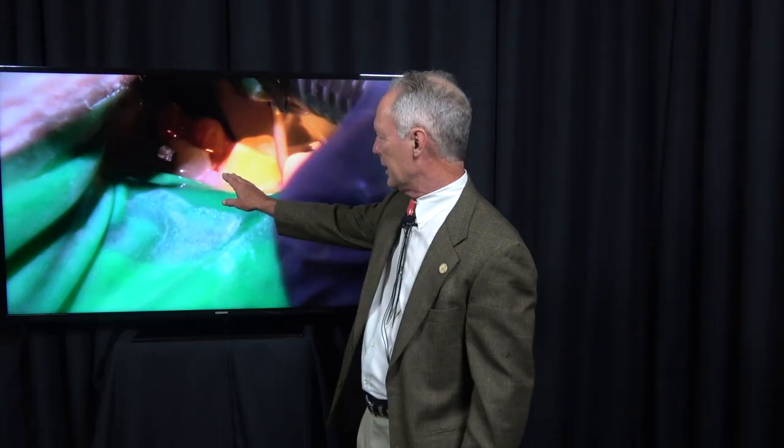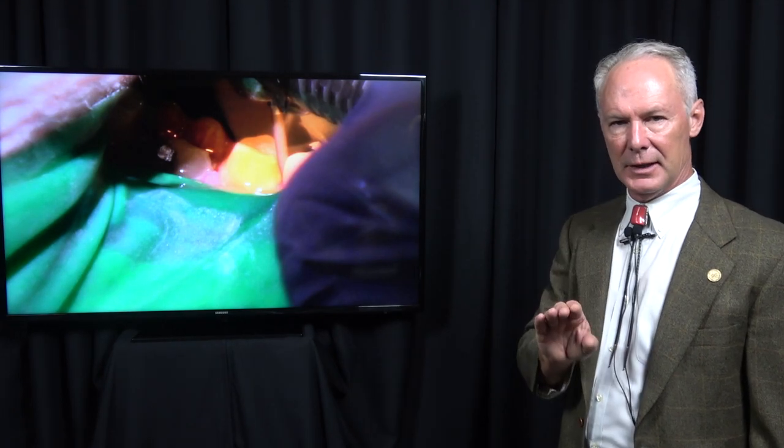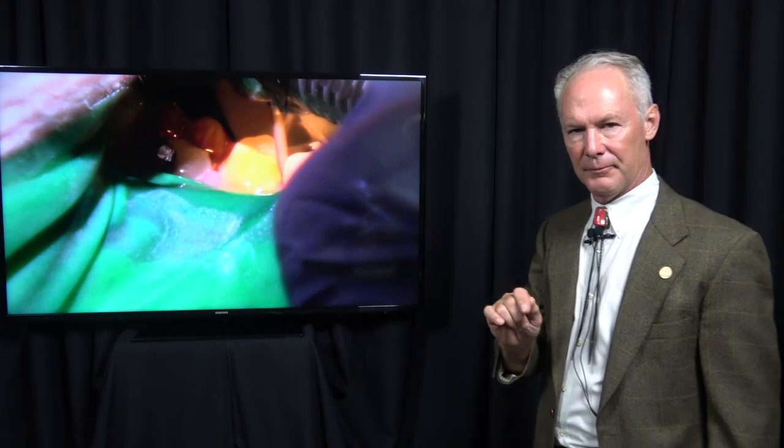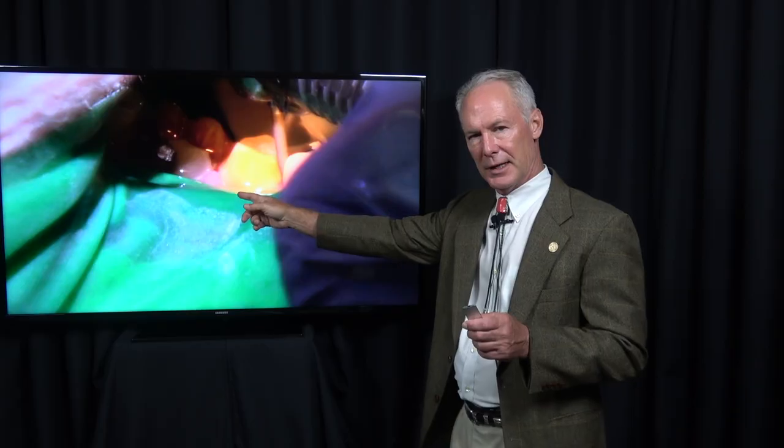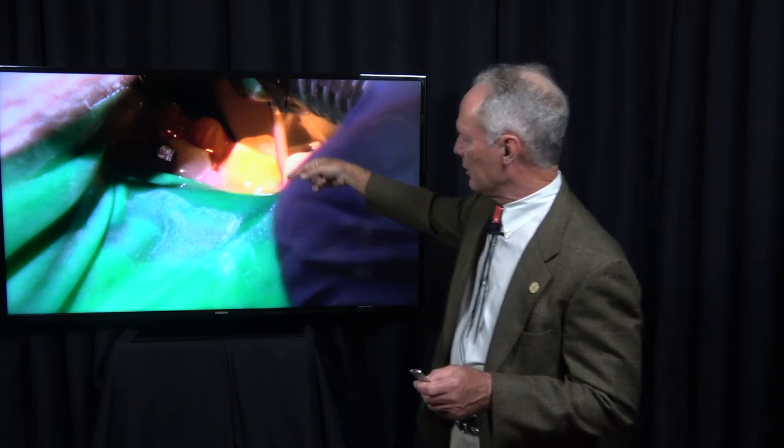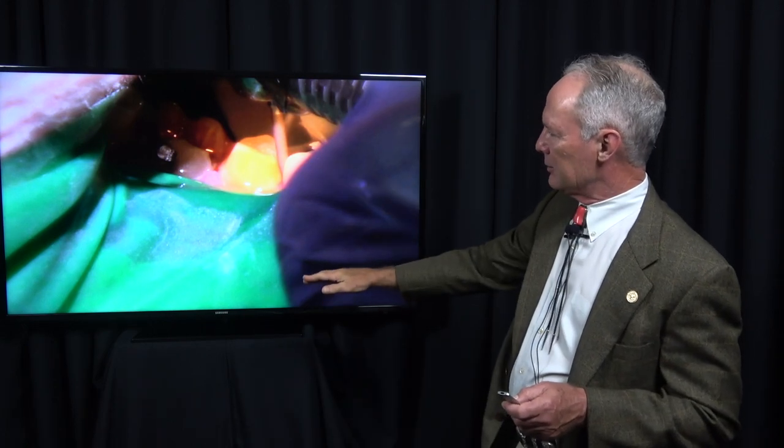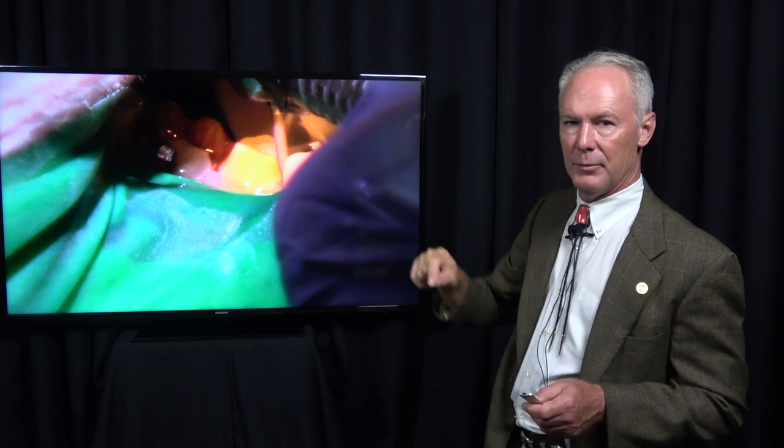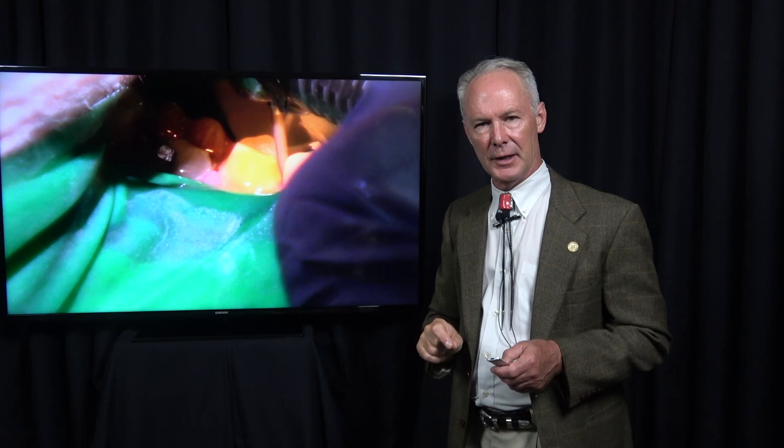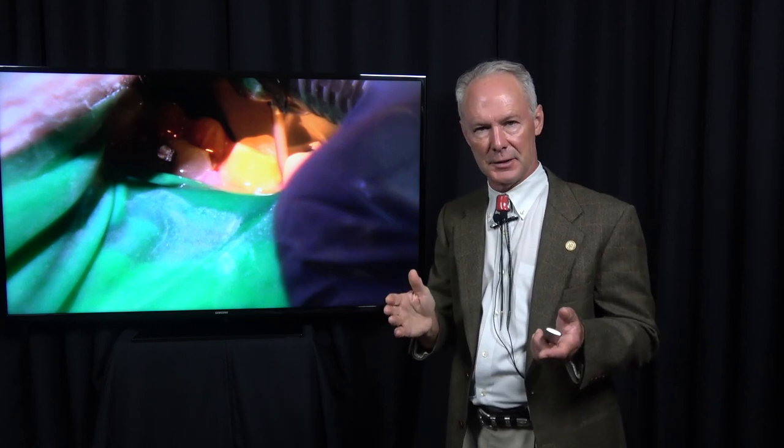How deep are the margins? Interproximally, I only want the margins to be about a half millimeter into the sulcus. Why? You want to be sure that you don't invade the biologic width, that you don't prep into the junctional epithelium, the connective gingival tissue. If you do, you'll have inflammation all the way around your crown and recession. If you prep too deep interproximally, it's very difficult to remove all the interproximal cement, and that can also cause post-operative gingival problems.